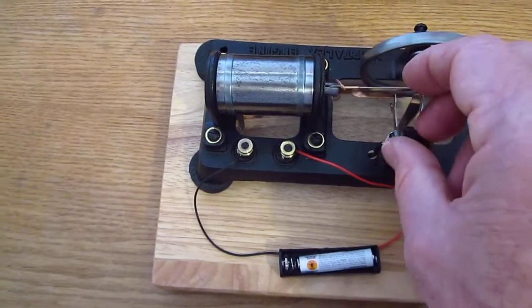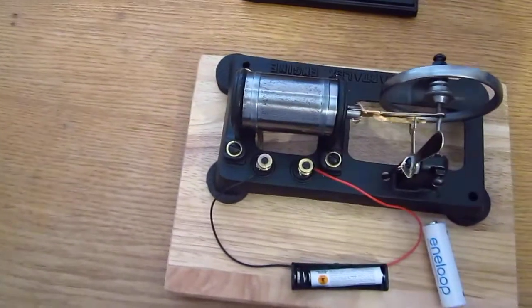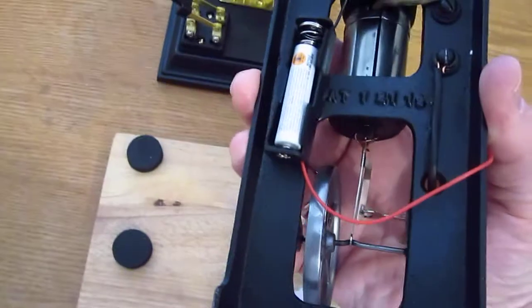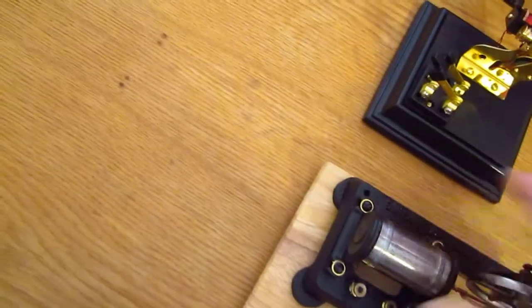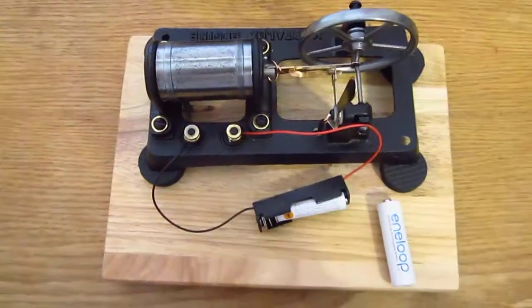And just to show you that there's no tricks, I'm going to shut it off by putting it in neutral and show you the underneath side of it. That's the battery pack that I had out. There's nothing underneath. Okay, that's it. Thanks for watching.